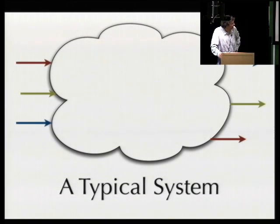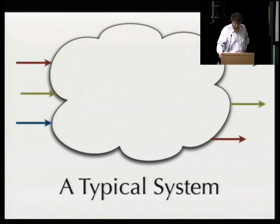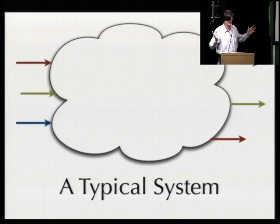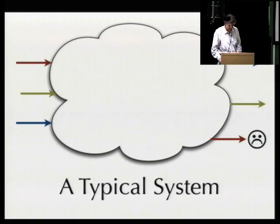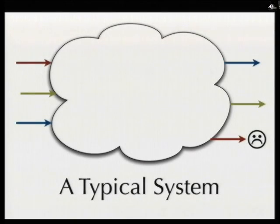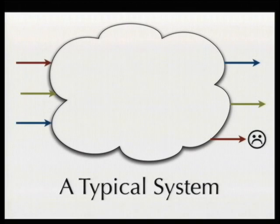Our model of a typical system is something like this: you have some kind of inputs on the left and outputs on the right, and then there's a cloud in the middle with all kinds of stuff in it. The inputs go into the cloud, stuff comes out, and it's not really clear what's going on. Every now and again, a bad output arises, and then it falls to some engineer or system administrator to figure out why that bad thing happened.